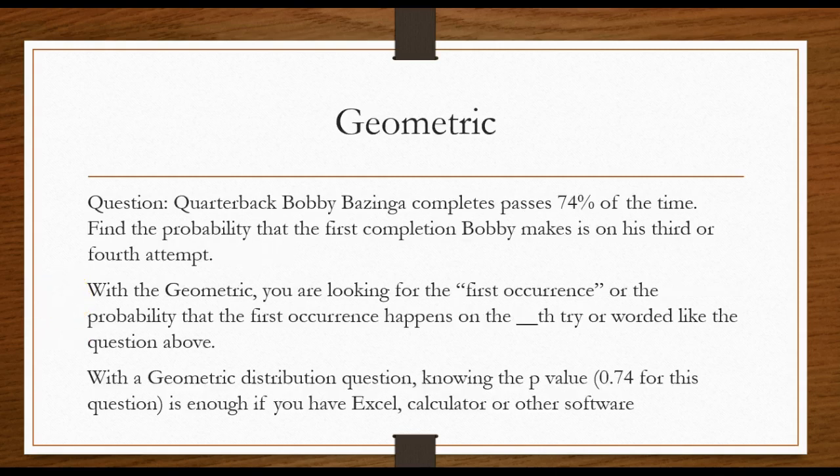Now with the geometric distribution, quarterback Bobby Bozinga completes 75% of his passes.